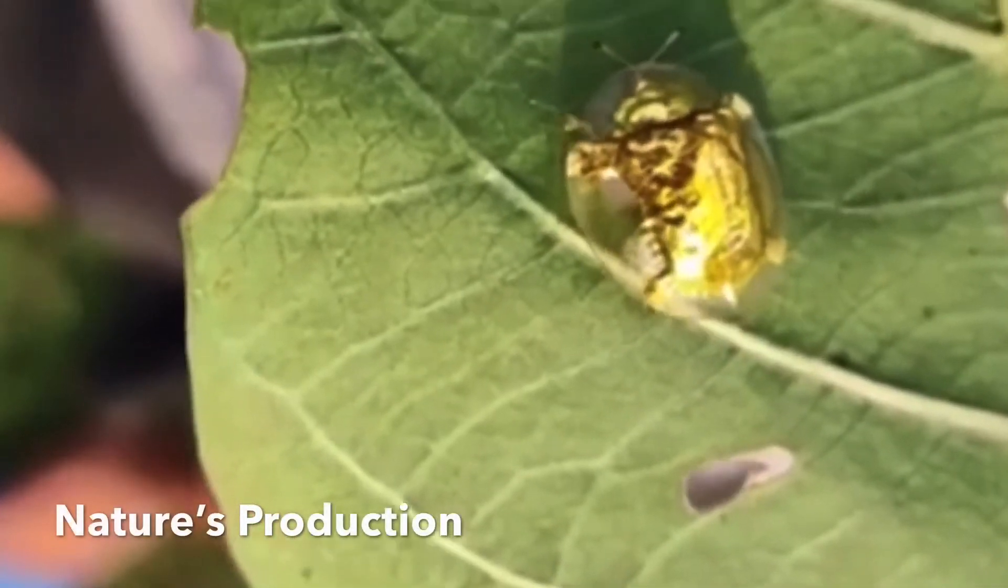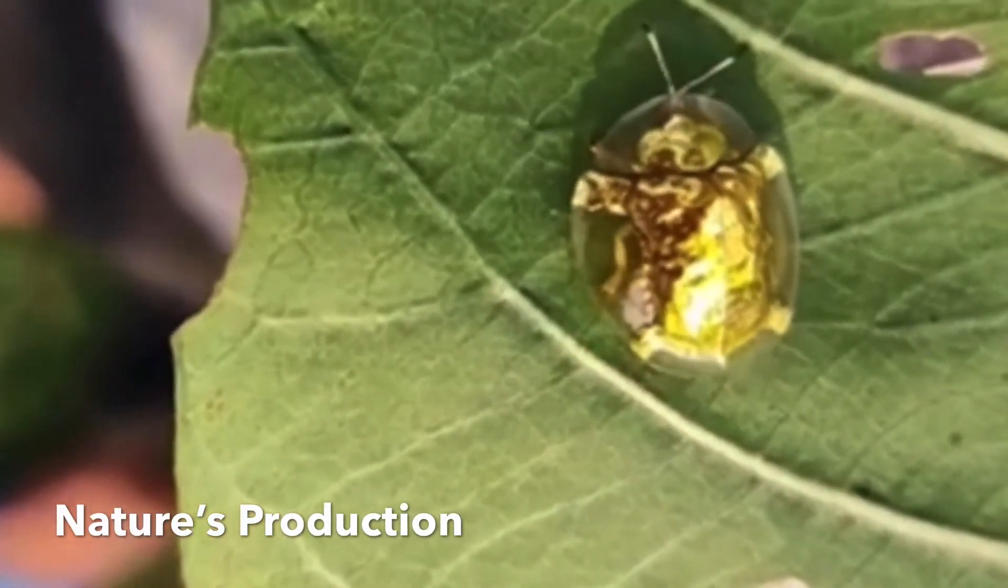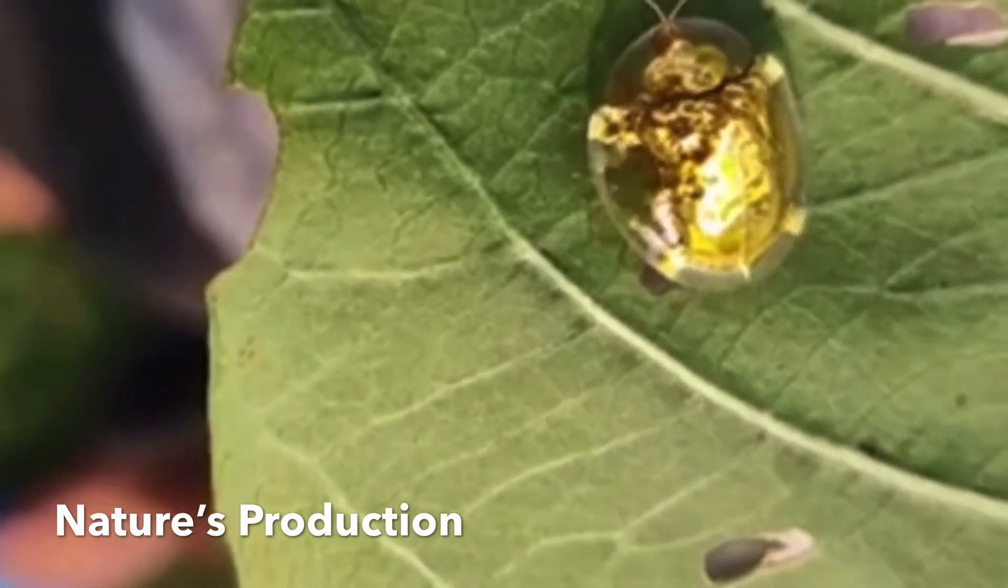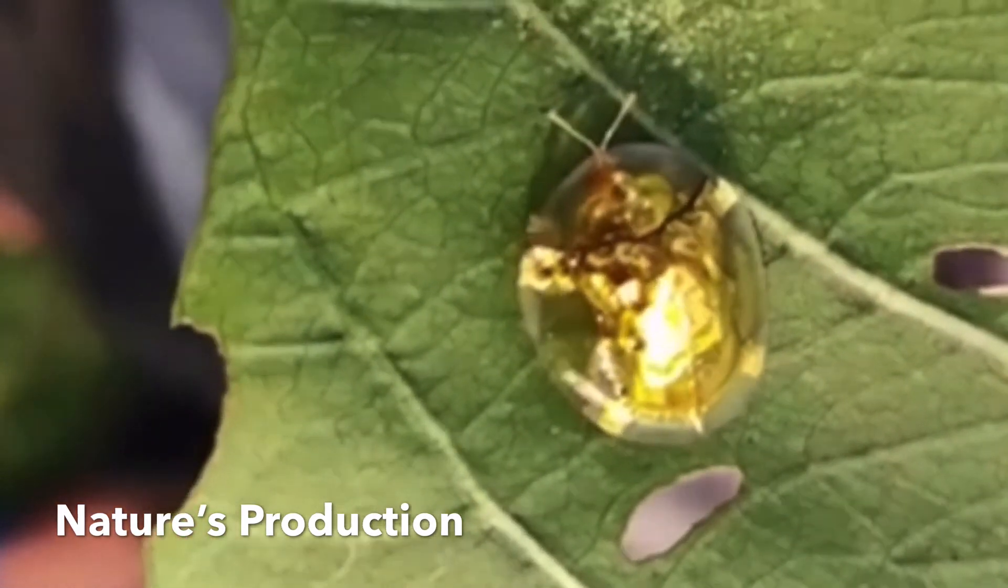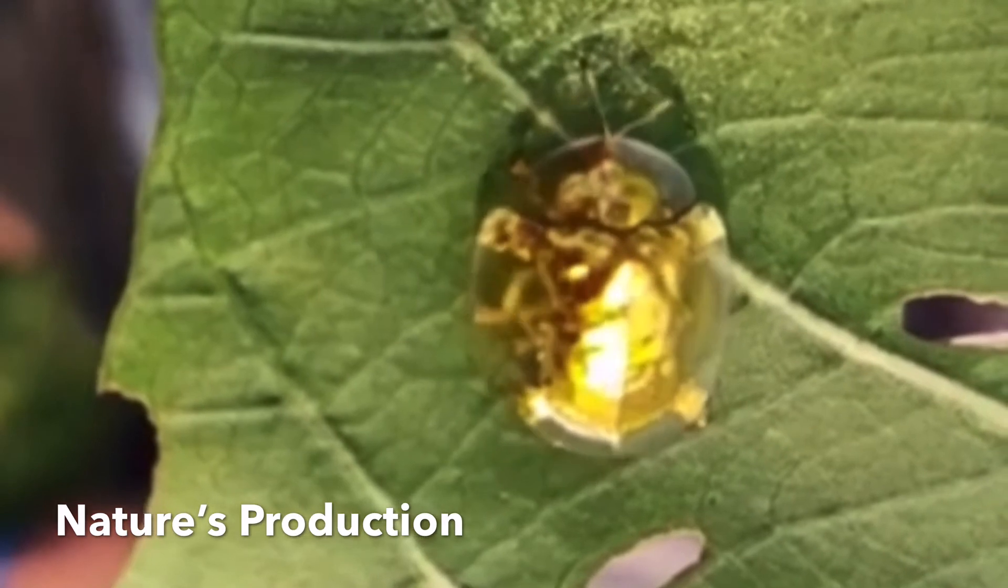Known as the Golden Tortoise Beetle, it is a species of beetle in the leaf beetle family Chrysomelidae. It is native to America, measuring from 5 to 7 millimeters in length.